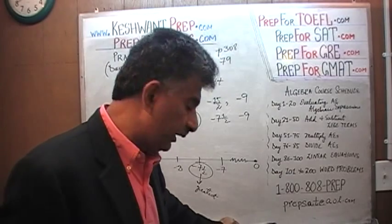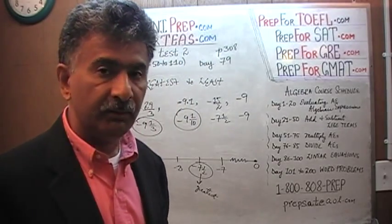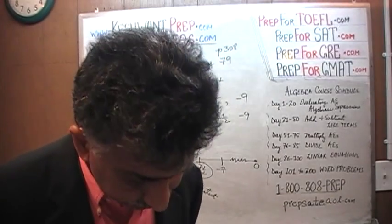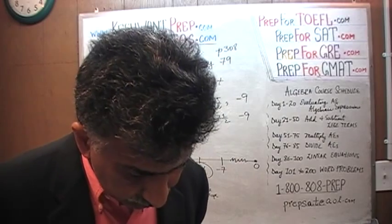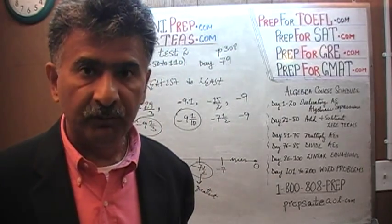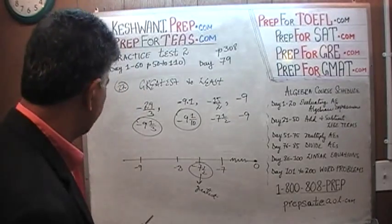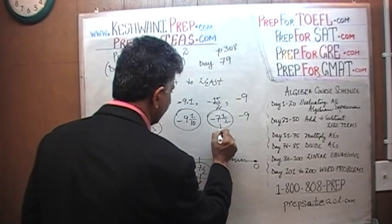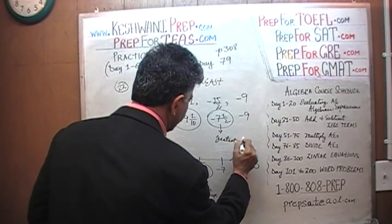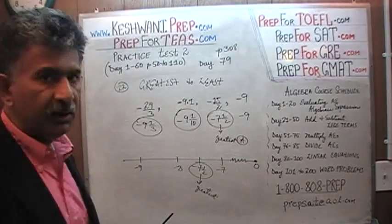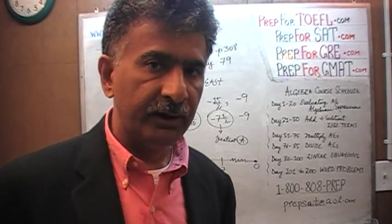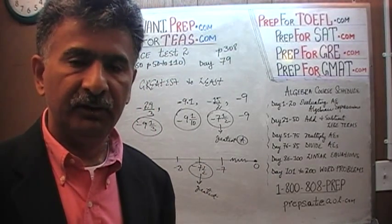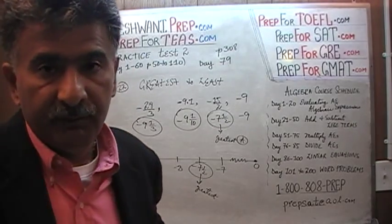Cross out as many answer choices as you can that do not begin with negative 7 and a half. Every single answer choice can be crossed out except A. The answer is A — the only answer choice which begins with negative 7 and a half. So had this been a real exam, I wouldn't waste my time doing all the rest of it. There's no point — we already found the answer. It's A.